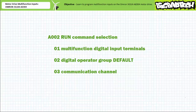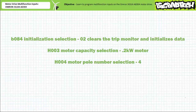Before navigating to and changing these parameters, let's establish a base state, establish a common language, and install some external devices. Before making use of the OMRON 3G3JX AE004 motor drive, we'll initialize the drive to a default state and clear any errors using initialization protection parameter B084. Then we'll program it to recognize a 200-watt motor with a nominal rotational speed of 1800 RPM using the motor settings parameters H003 and H004.